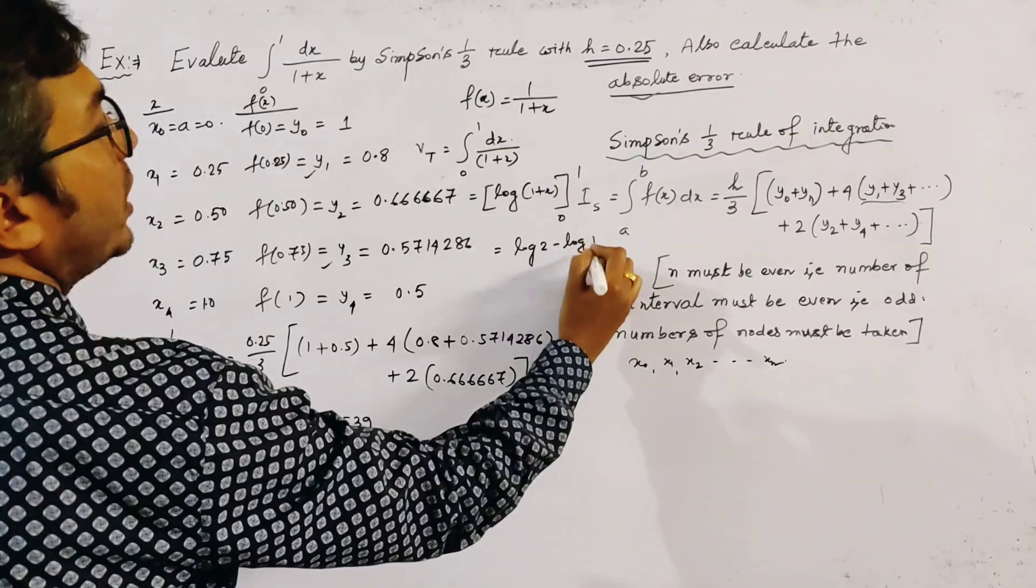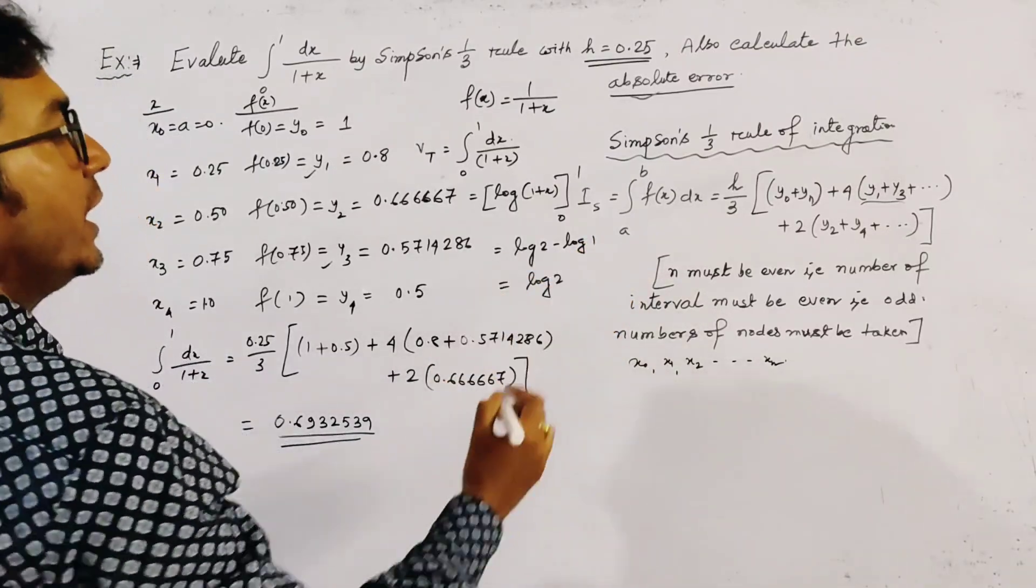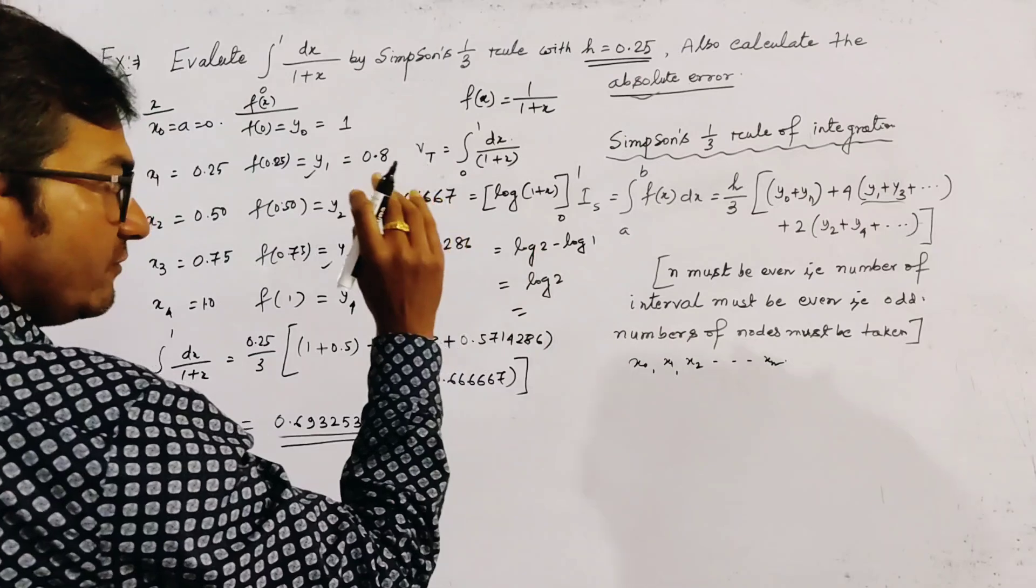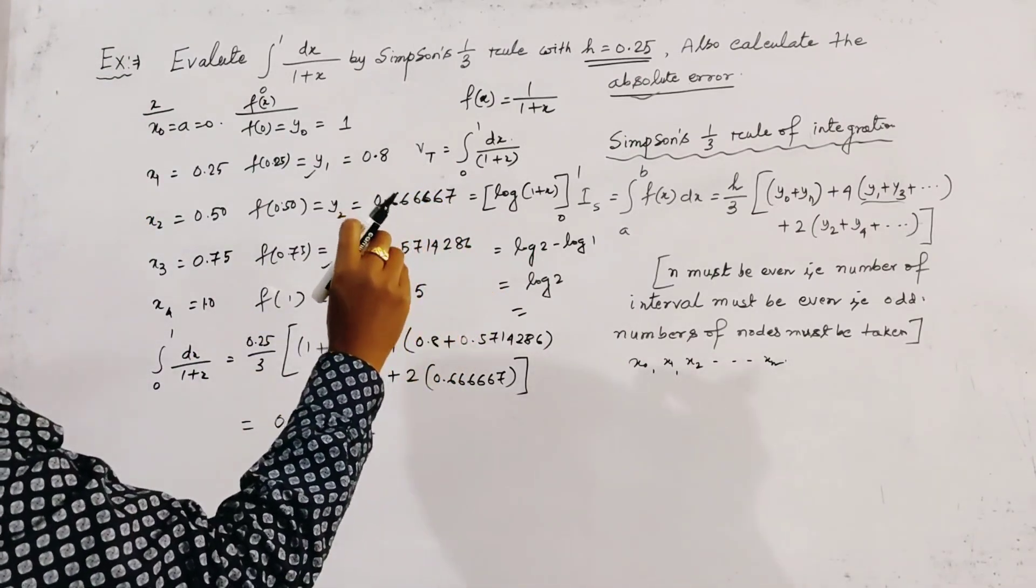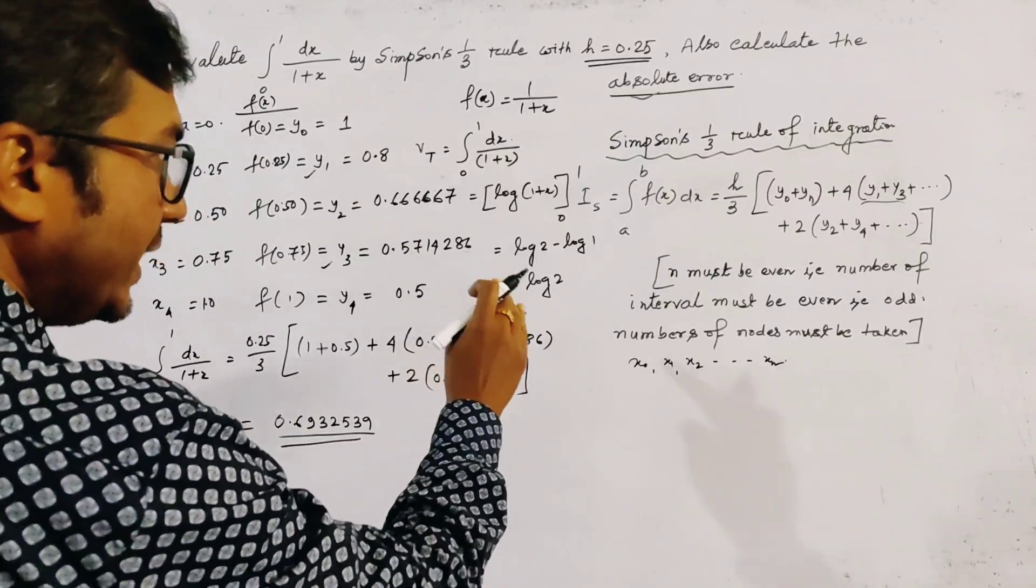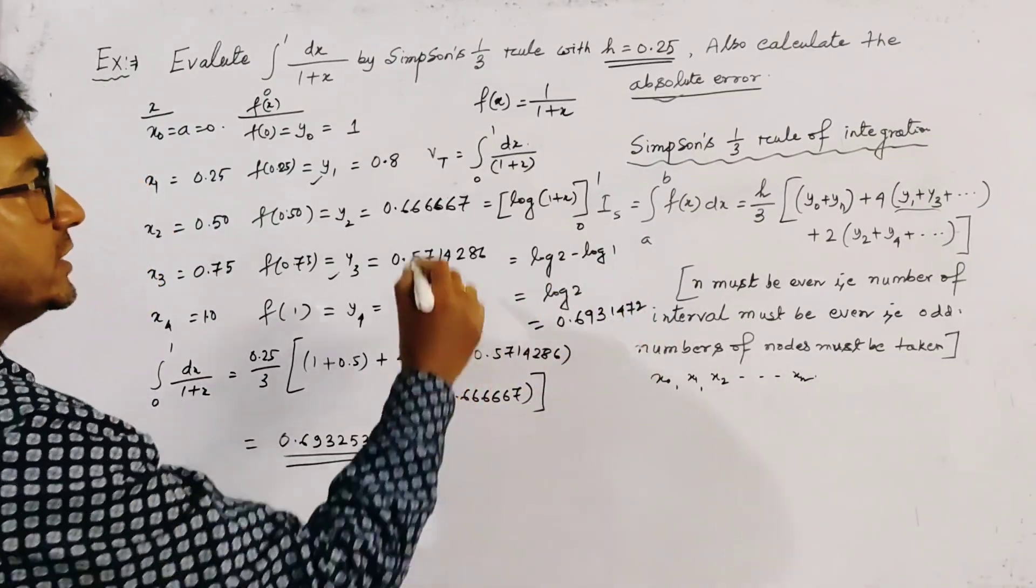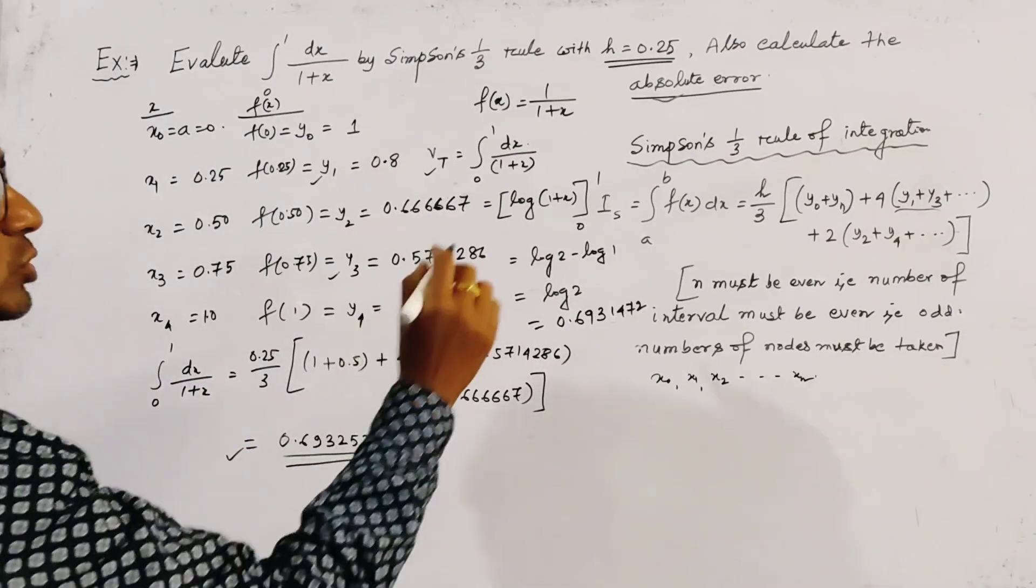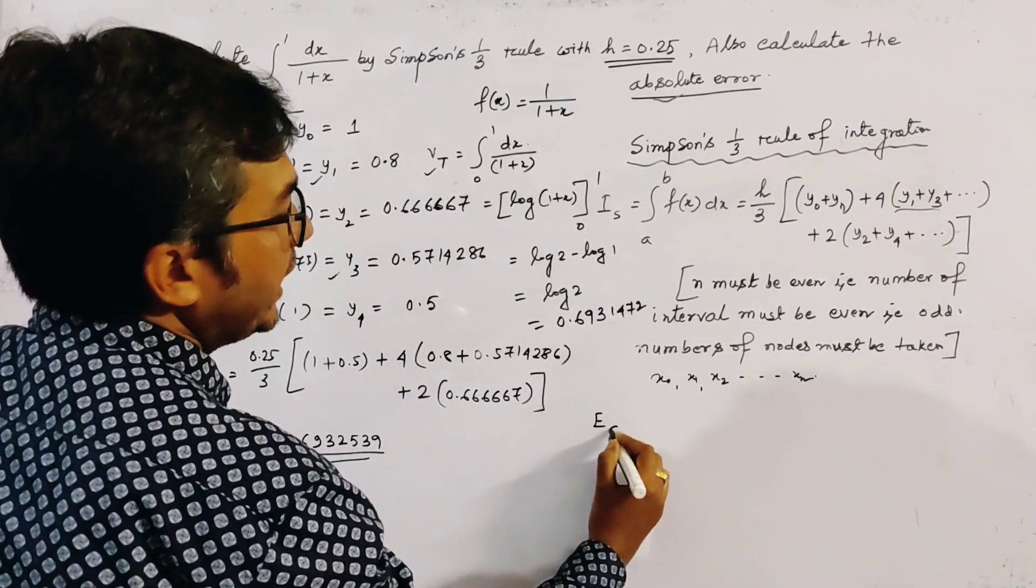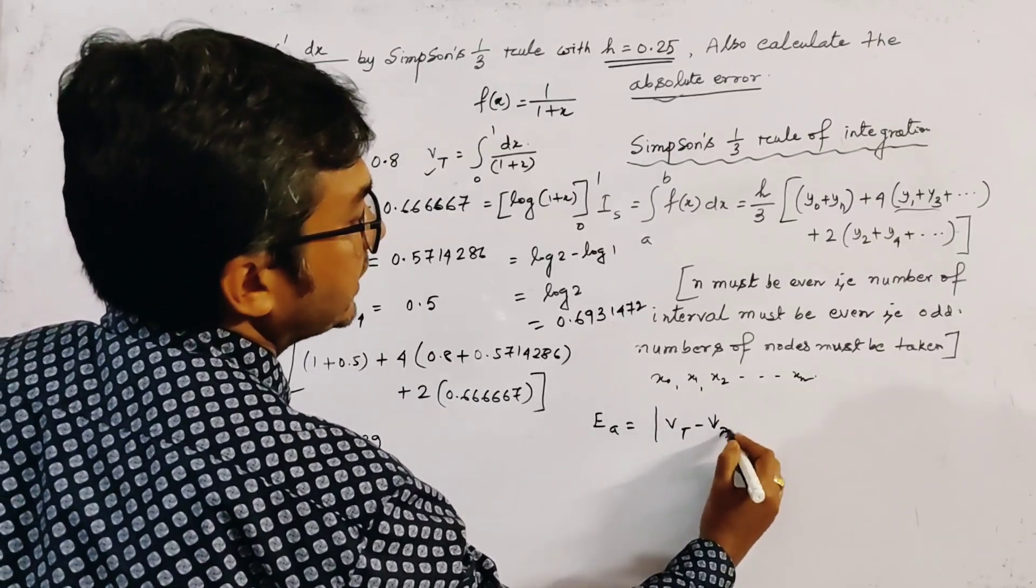We calculate the value of log 2 by calculator, and this is 0.693142. This is the true value, and the previous is the approximate value. So the absolute error EA is given by the modulus of VT minus VA.